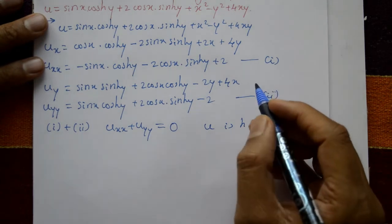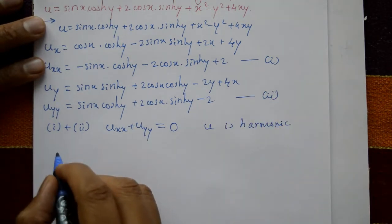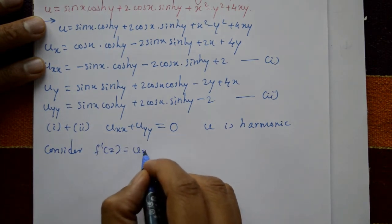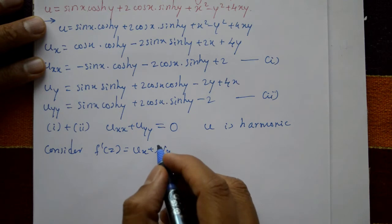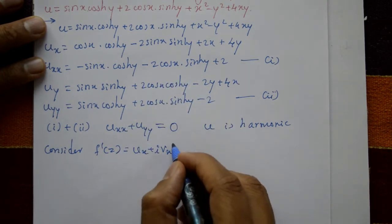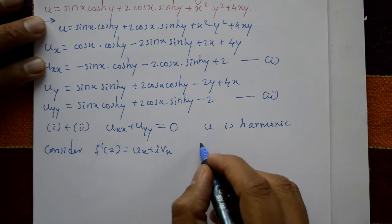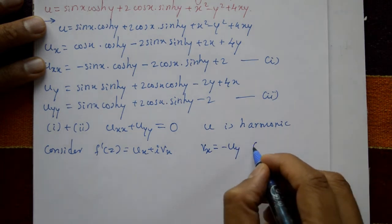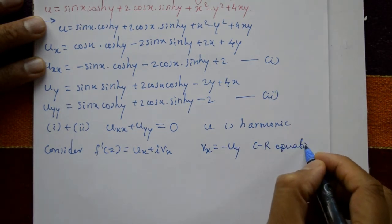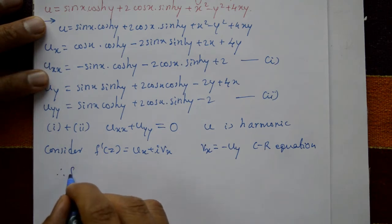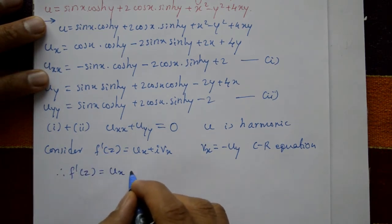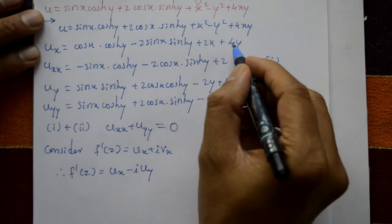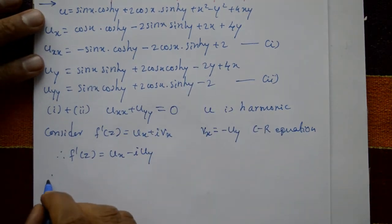Next, to find f(z) as an analytic function. Consider this in Cartesian form: f'(z) = u_x + i·v_x. Since the real part is given, we change to imaginary part using the Cauchy-Riemann equation: ∂v/∂x = −∂u/∂y. Therefore f'(z) = u_x − i·u_y.